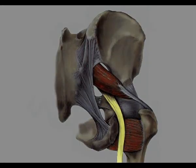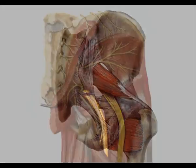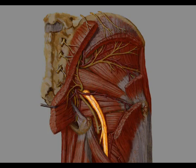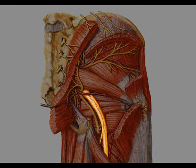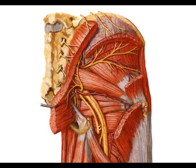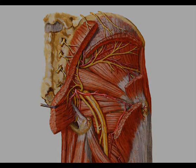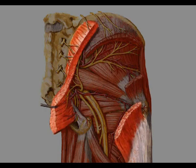The sciatic nerve exits the pelvis through the greater sciatic notch. It travels under the piriformis muscle, then continues its course posterior to the obturator internus, gemeli, and further caudally the quadratus femoris. It is accompanied by the inferior gluteal vessels and is close to the ischial tuberosity in the subgluteal area.